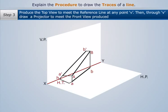In the third step, we produce the top view to meet the reference line at point V. Then, through V we draw a projector to meet the front view produced.